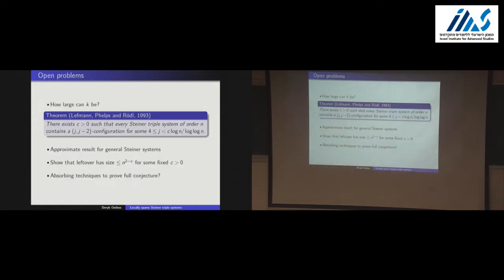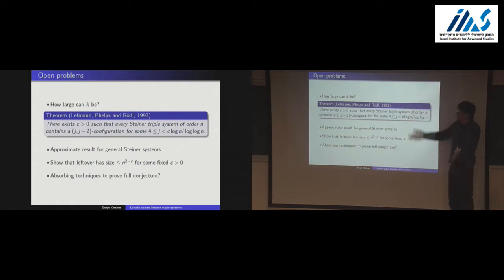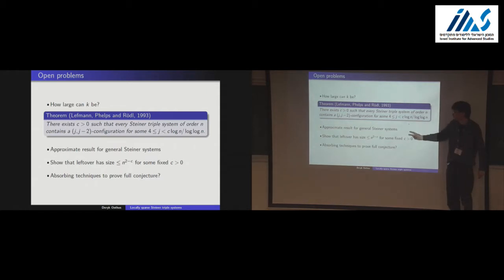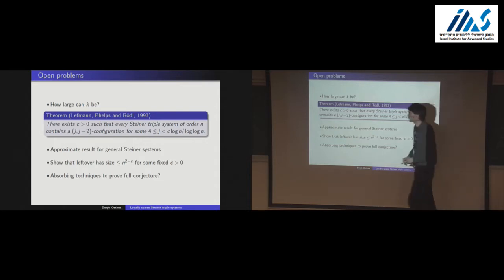Some open problems: concerning the Erdős conjecture, how large must N be compared to K? Leffmann, Phelps and Rödl showed N must be at least exponential in K. Can we generalize our random process result to general Steiner systems? Can we improve the leftover of the process — we proved it's o(N²), but could it be N^{7/4} or even N^{3/2}?